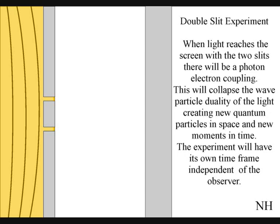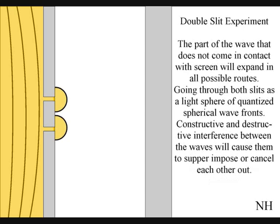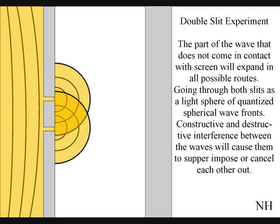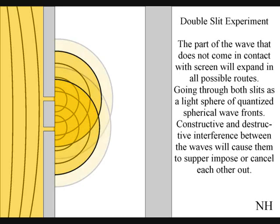The part of the wave that does not come in contact with the screen will expand in all possible routes, going through both slits. Interference between the waves will cause them to superimpose or cancel each other out.